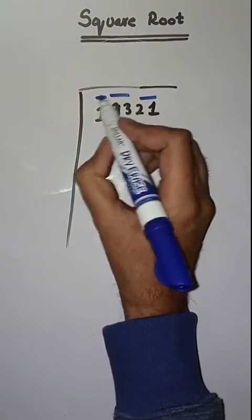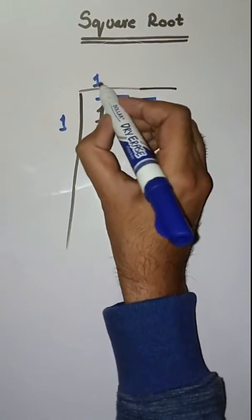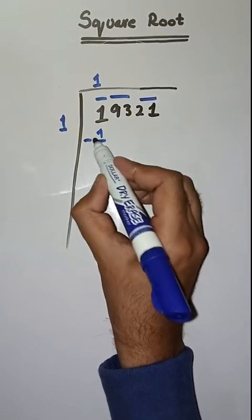So first we have to solve 1. So we take a number 1. 1 times 1 is 1. Minus karenge, mali paas aajega 0.